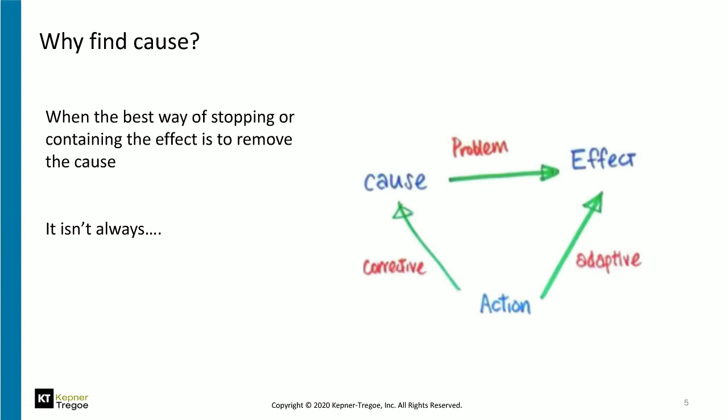Your view of workarounds could be a little like what you see on screen now. Whenever you have a problem there's a cause, and there's an effect on the business, process, or quality. We can take action in one of two ways: corrective — remove or modify the cause so the problem no longer exists — or against the effect or symptom. We call those corrective or adaptive depending on which action we're going to take.